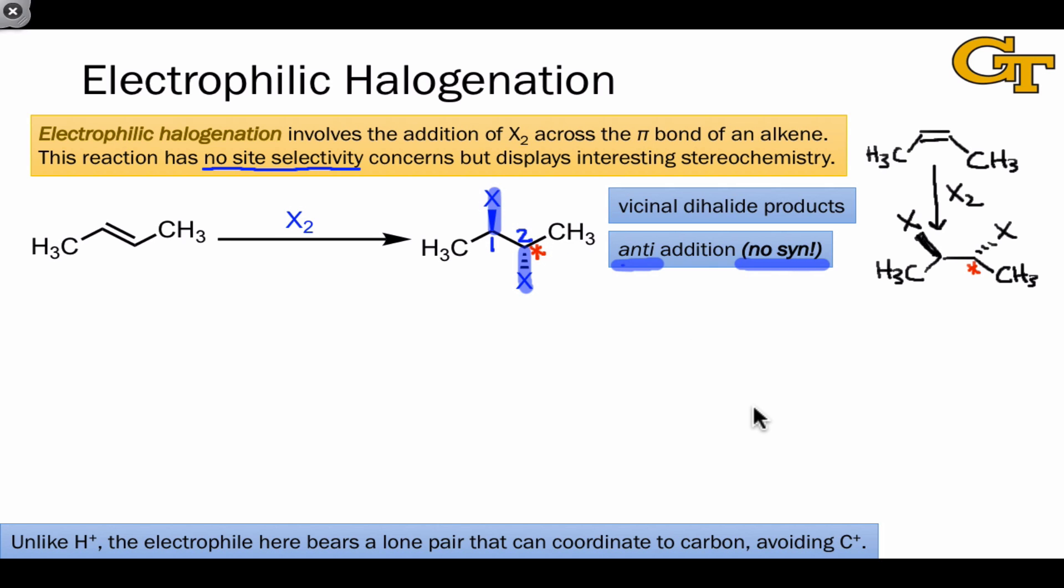Mechanistically, this reaction type is distinct from electrophilic additions involving H+ that we've seen already. The key difference is that the electrophile bears a lone pair that can coordinate back to the alkene. The first step is an unconventional electrophile association step where there is coordination of the alkene to the halogen atom and departure of X with a pair of electrons, but at the same time, a pair of electrons on the electrophilic X atom is donated back to the alkene.